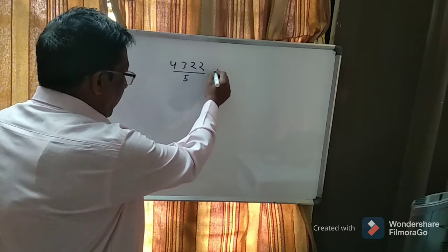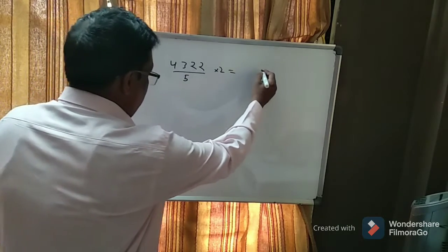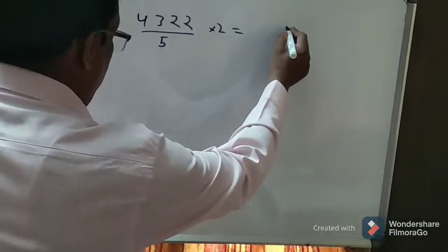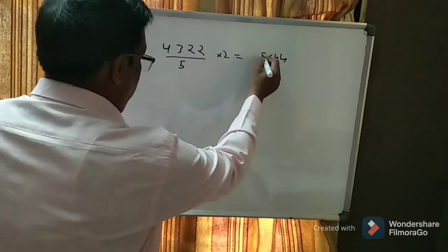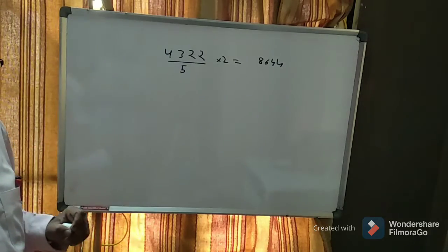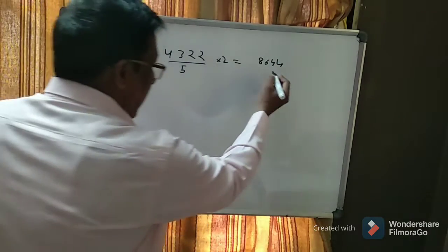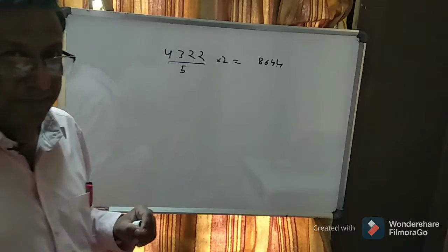First step is multiply the given number by 2. Your answer becomes 2, 2, 4, 2, 2, 4, 3, 2, 6, 4, 2, 8. Since the divisor is 5, it is single digit, so you will have to take a point from right hand. This is the first step.